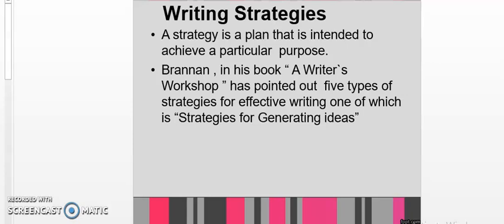First of all, we should know what a strategy is. If we want to write something, we need to have some strategies to write. The first thing is writing anything needs ideas. Now these ideas can be generated with different strategies. A strategy is a plan that is intended to achieve a particular purpose. Brennan in his book A Writer's Workshop has pointed out five types of strategies for effective writing, one of which is strategies for generating ideas. There are different strategies through which a student, a writer, anyone can generate an idea for his writing.